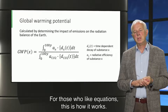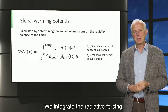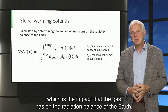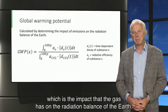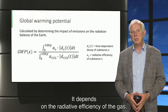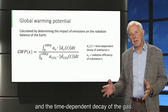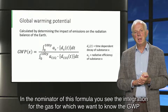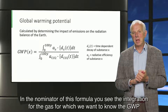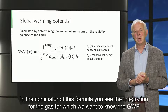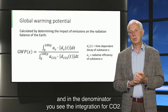For those who like equations, this is how it works. We integrate the radiative forcing, which is the impact that the gas has on the radiation balance of the earth. It depends on the radiation efficiency of the gas and the time-dependent decay of the gas. In the denominator of this formula, you see the integration for the gas for which we want to know the GWP, and in the denominator you see the integration for CO2.